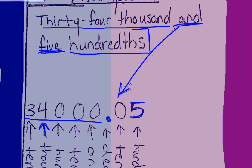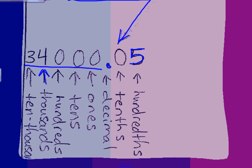And finally, my last step is looking for the place value of that last digit. Five falls in the hundredths place, so we must place a zero in the tenths place to give us thirty-four thousand and five hundredths in standard form. Well, I hope this helped you out.